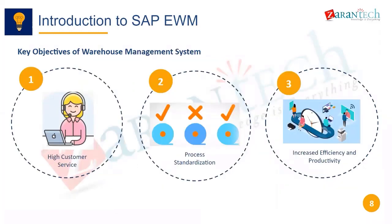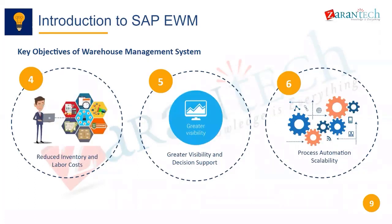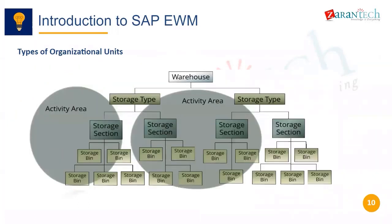The key objectives of a warehouse management system include process standardization, efficiency, productivity, customer service, automation, and scalability. Now let's talk about the organizational units in EWM. In EWM, a warehouse contains several areas.